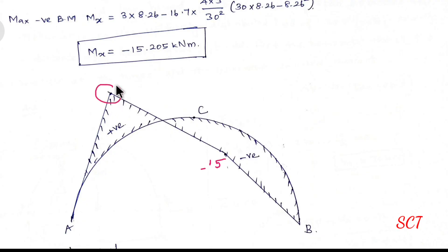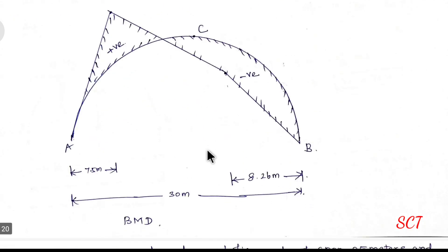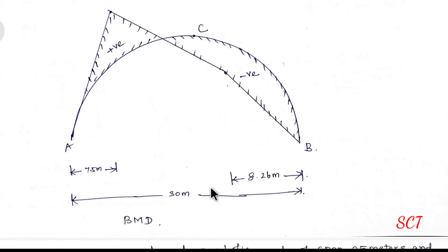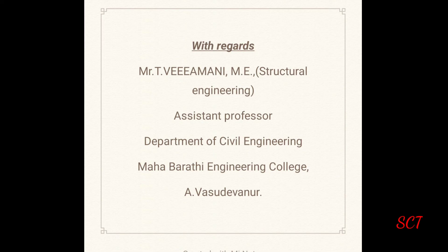So this is the bending moment diagram: maximum positive bending moment under the load, and maximum negative bending moment of minus 15.205 kNm in the BC span. That is how we draw the bending moment diagram for this two-hinged parabolic arch. Thank you.